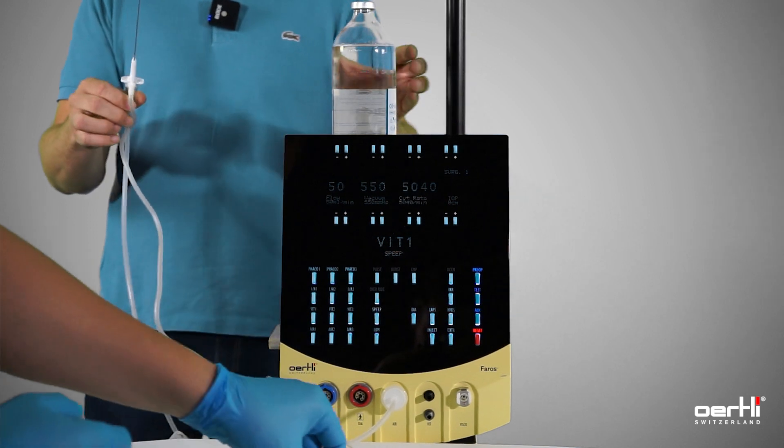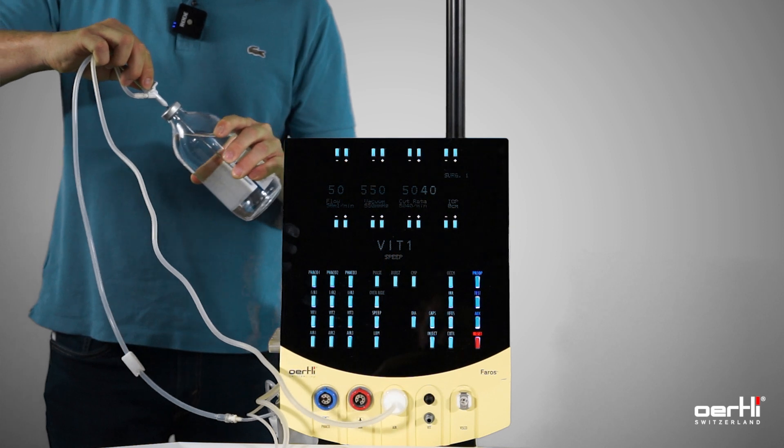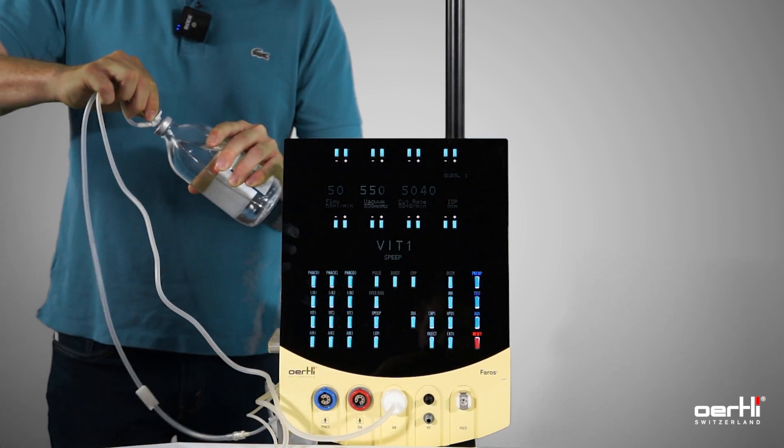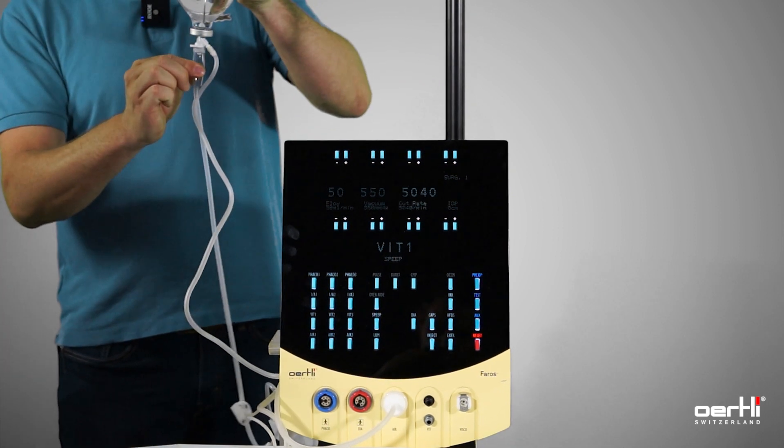Very gentle. Put the giving set, the needle, into the BSS bottle. Fill the drip chamber with approximately 50%.